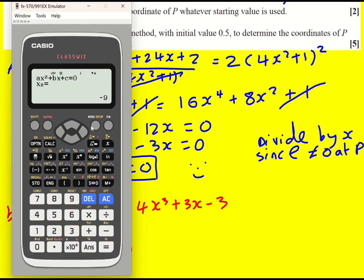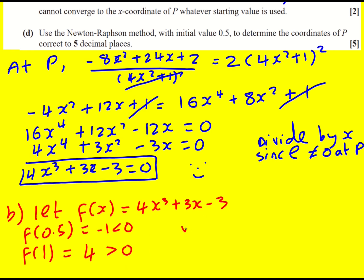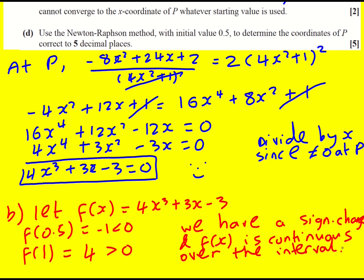It's just going to be 4 times 1 cubed, which is 1, so 4 plus 3 minus 3, it's going to be 4, which is greater than 0. I'm seeking a sign change here. And then it's going to be 4 times 0.5 cubed plus 3 times 0.5 minus 3 for the other one, which equals minus 1, which is less than 0. So we have a sign change, and f of x is continuous. So P lies between 0.5 and 1.